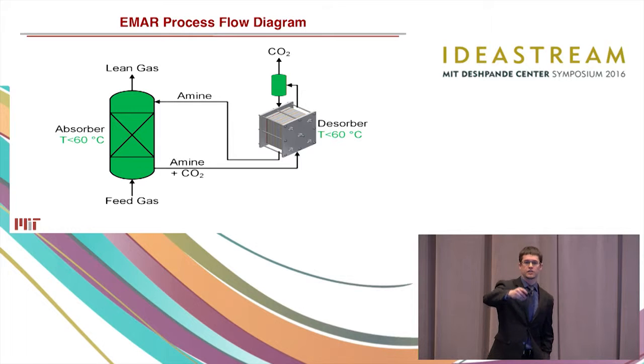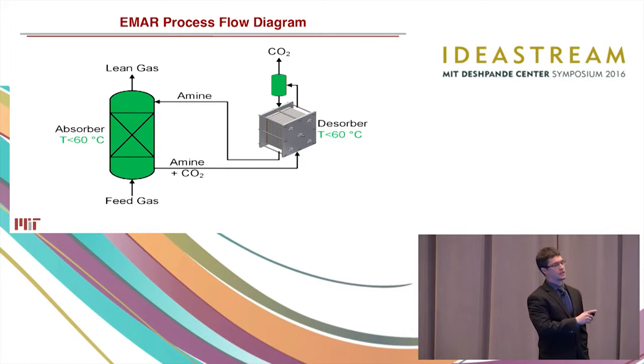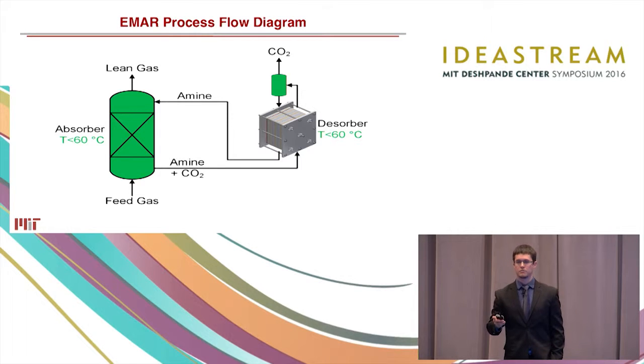And how would it look in practice? Well we would take some feed gas, let's say flue gas from our power plant, we would expose it to the amines in an absorber, then that amine bound CO2 would travel to the EMAR desorber where the CO2 would be released and the amines would be refreshed. It's important to note here the temperature, right?